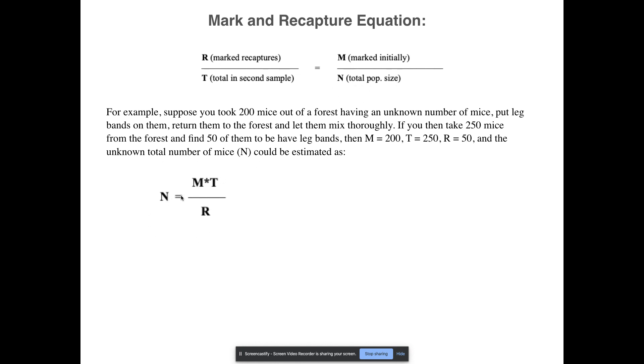So we can find N. What we do is we rearrange our equation. N equals M times T divided by R. So I would set that up: 200 times 250 divided by 50. That means we have approximately 1000 mice in our population. This is a great way of being able to count something that is going to be impossible to count on its own. So instead, it's easier to capture a certain population of them, just a small sample, and then to come back at a later time and see how many of them you recaptured after you marked them.